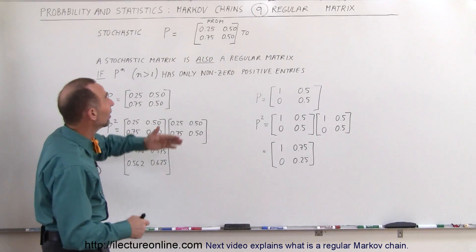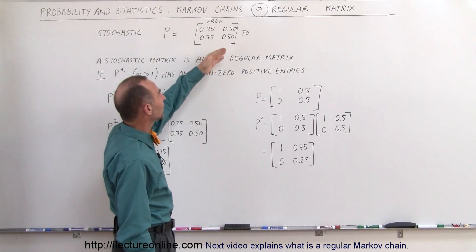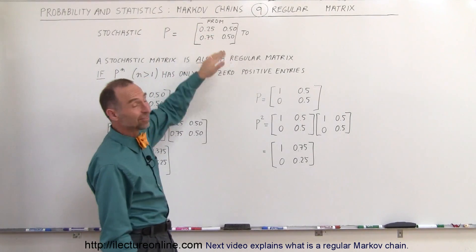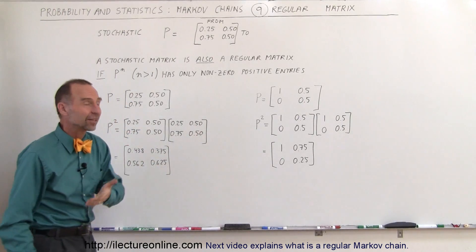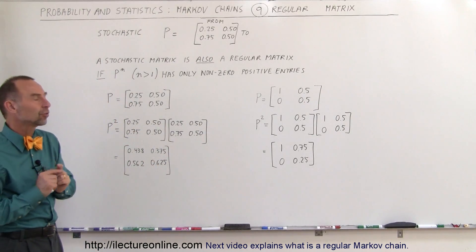So stochastic means that if we add the columns up vertically they add up to 1. So you can see in this example that is indeed a stochastic matrix. But is it also a regular matrix?